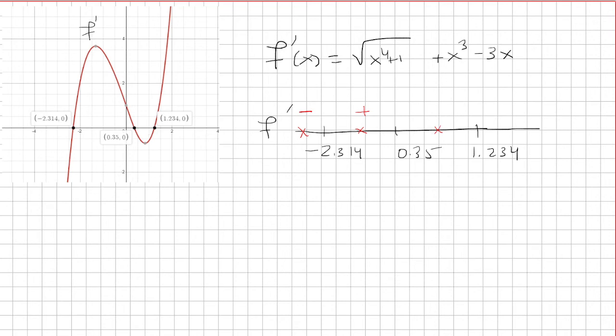Between 0.35 and 1.234, we're down here, which is below the x-axis. That's negative. And then to the right of 1.234, we're above the y-axis.